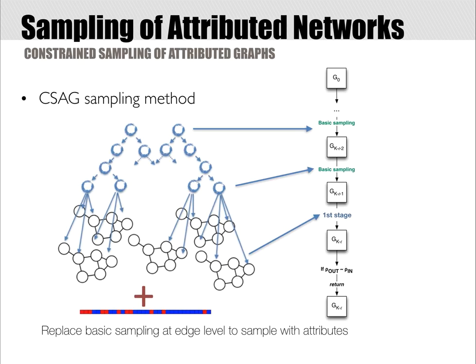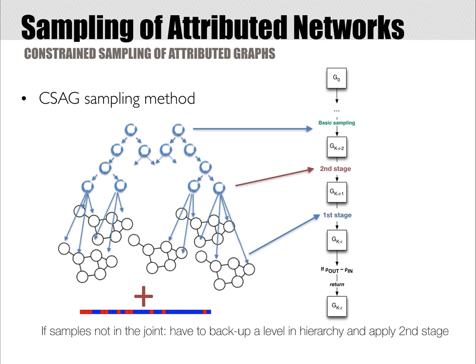We propose CISAC, Constrained Sampling for Attributed Networks, that introduces two stages of sampling that bias the search to regions of the network space with higher likelihood. It replaces the original basic sampling of the hierarchical generative model with a first stage that samples edges. If the target correlation is not feasible in the sample edges, it uses a second stage to sample blocks of edges. If needed, this stage is executed until the root of hierarchy is reached.